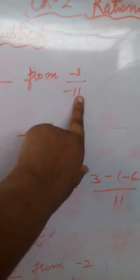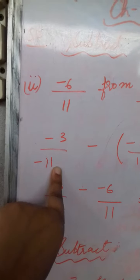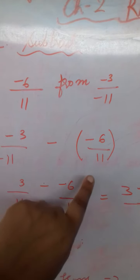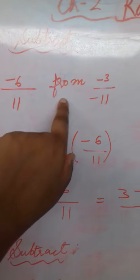So, from this term will come first. Okay. So, minus 3 upon minus 11 minus minus 6 upon 11. Subtract this from this.